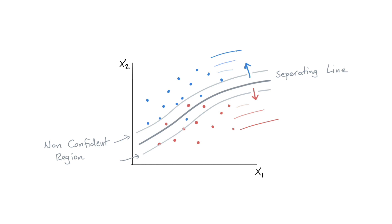And in these situations, if we get a new data point that sits in that non-confident region, well maybe it's best not to automate, but instead to apply a fallback scenario. And if we think about dialogue systems, then I hope you would agree that having a way to declare a fallback is very useful. It allows us to ask a user for clarification at appropriate times. If we're unsure about the next action, it might be better to fail elegantly.